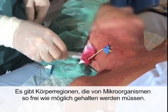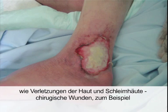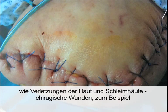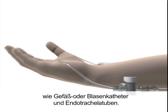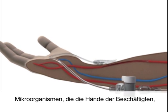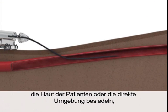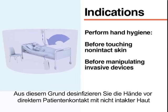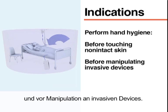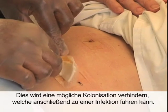There are body regions that must be kept as free of microorganisms as possible. These include zones of impaired host defense such as breaks in skin and mucous membranes, surgical wounds, or sites of invasive device insertion such as vascular or urinary catheters and endotracheal tubes. Microorganisms that colonize the healthcare worker's hands, the patient's skin, or immediate surroundings must not be introduced into these zones of lowered immune protection. For these reasons, perform hand hygiene immediately before touching non-intact skin and before manipulating invasive devices. This will prevent colonization, which may subsequently lead to infection.